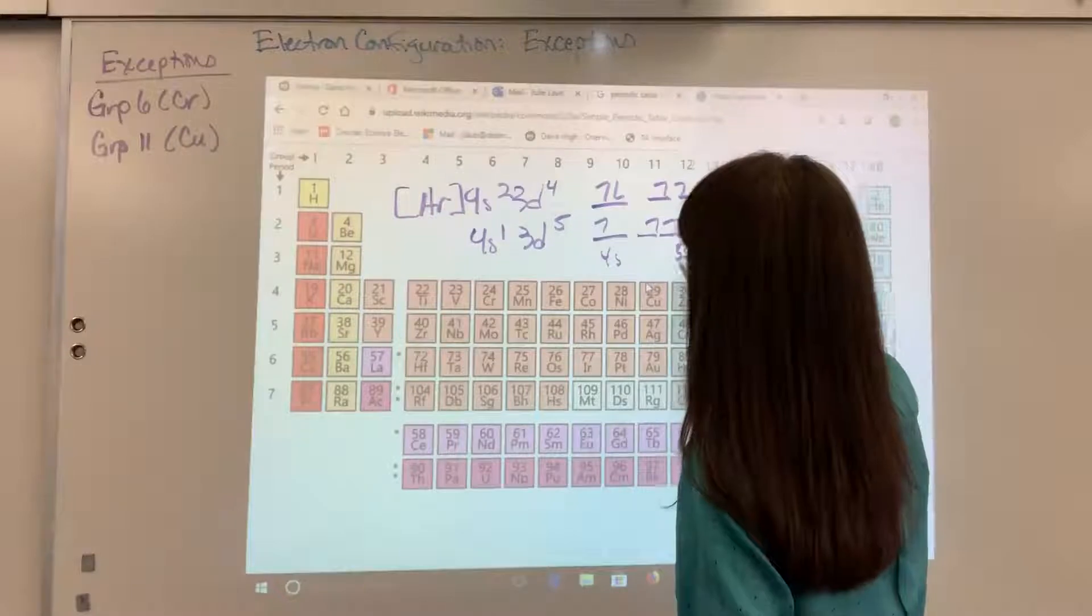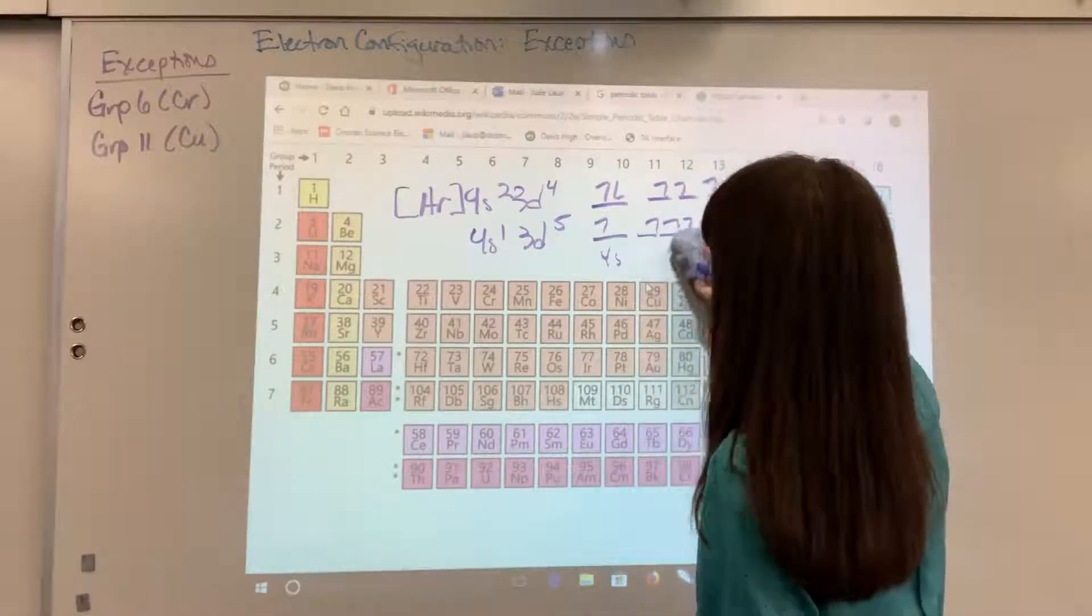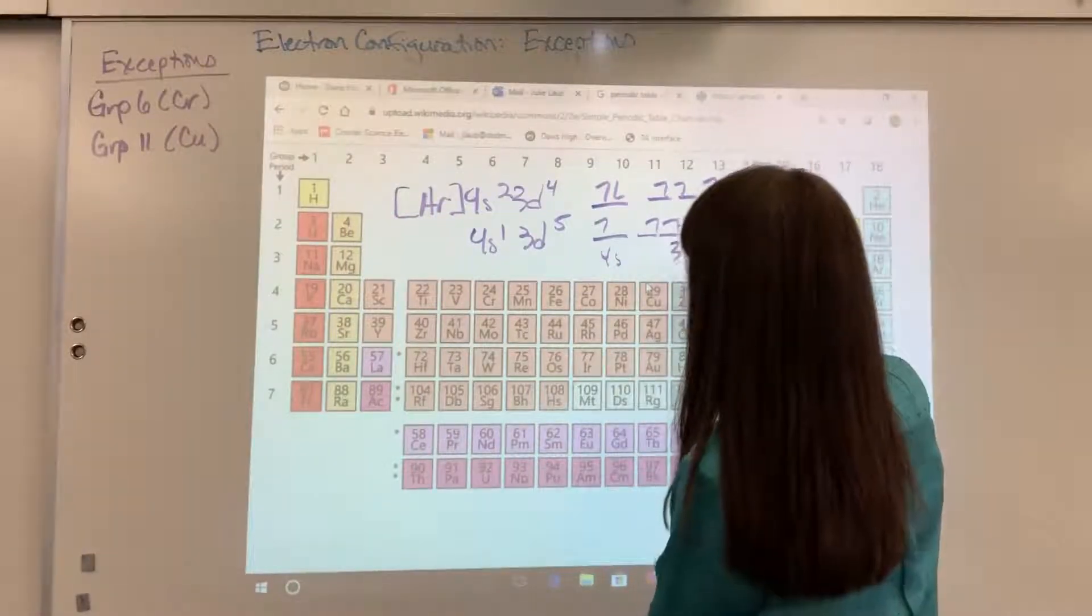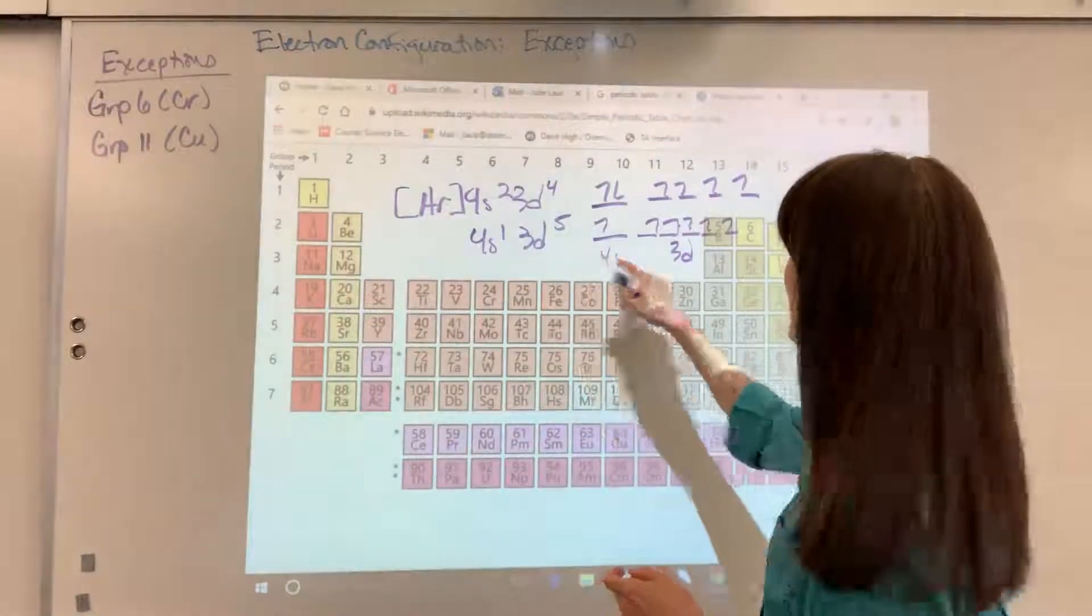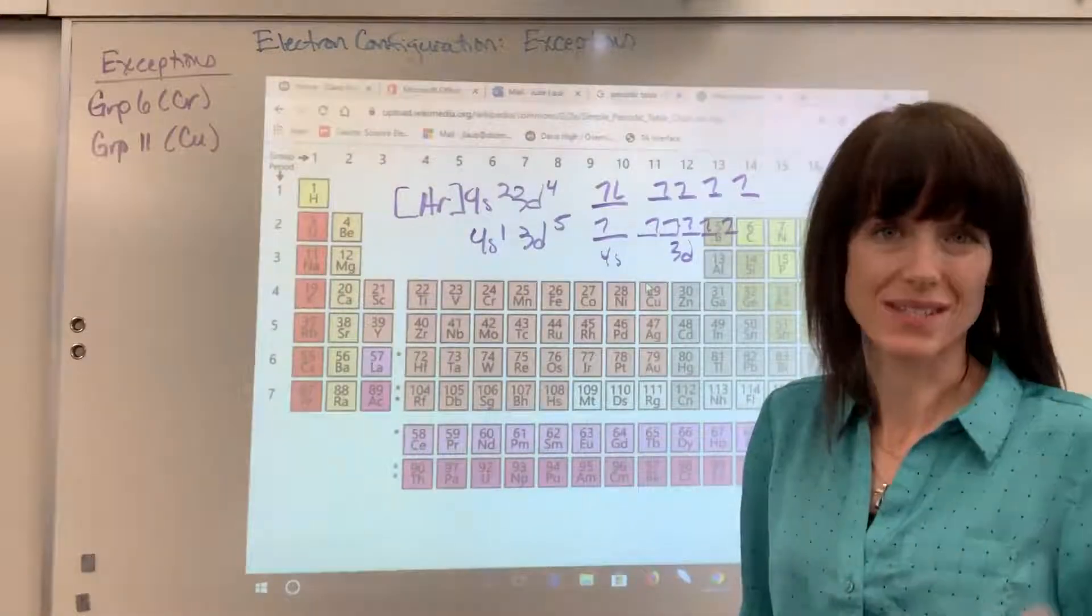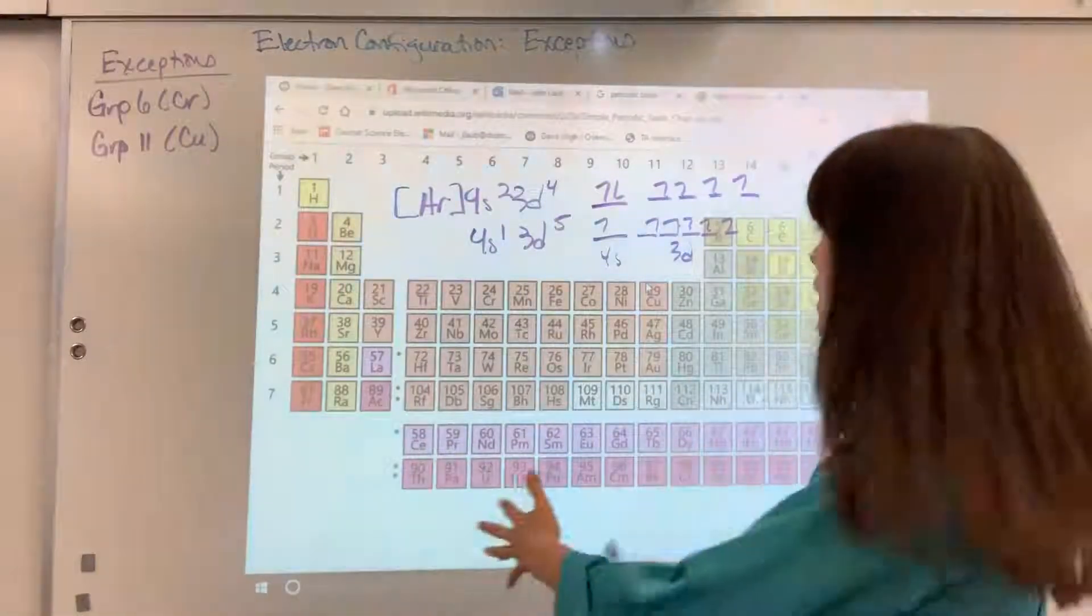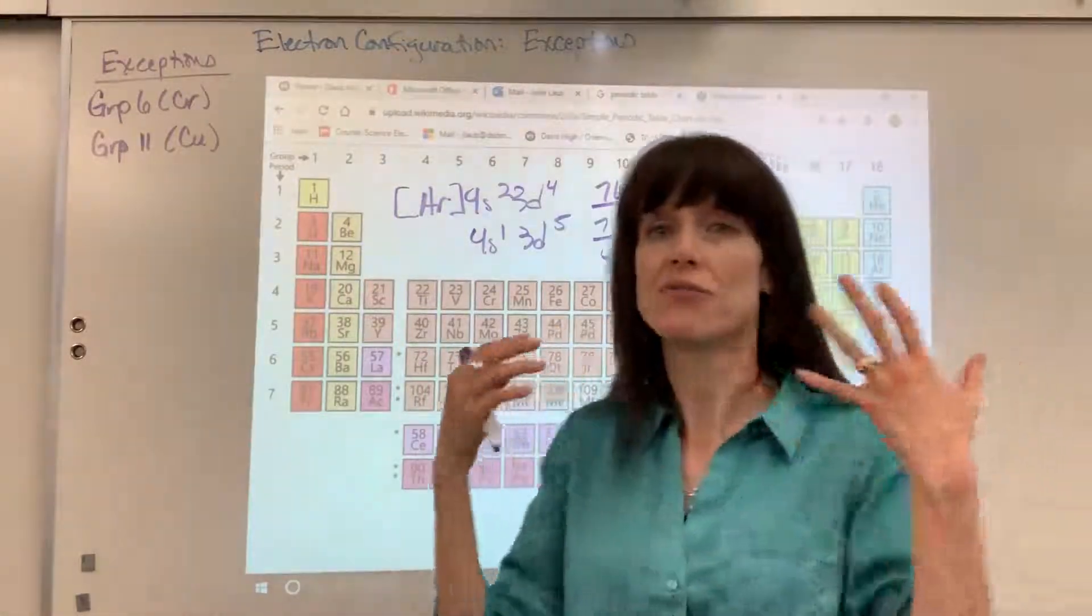So what you can see is we have a half-filled S block and a half-filled D block. This, energetically, is more stable. It's more stable to have this block that has 5 orbitals.